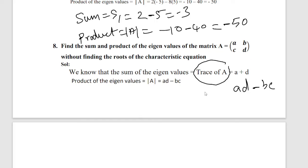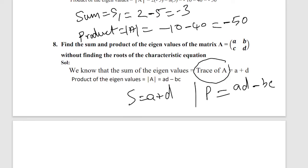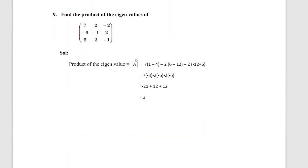Sum and product: sum of eigenvalues equals trace of A (sum of main diagonal elements, a + d). Product of eigenvalues equals determinant of A, which is ad minus bc. For a 3x3 matrix, the product of eigenvalues equals the determinant of the matrix.